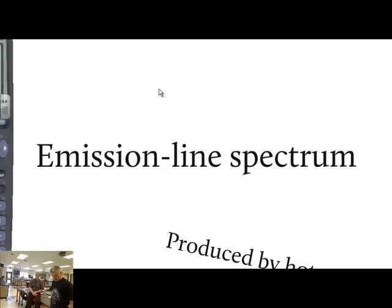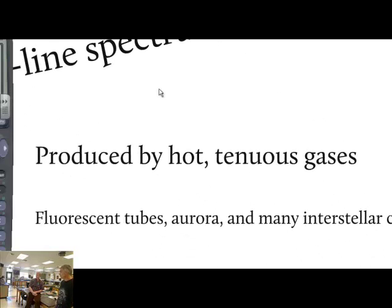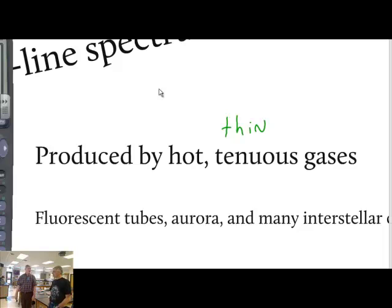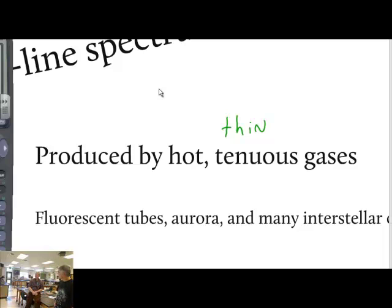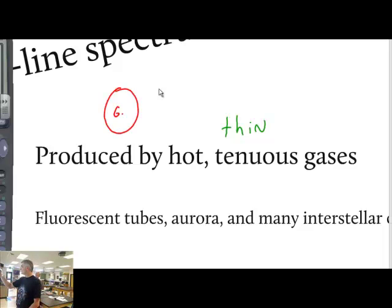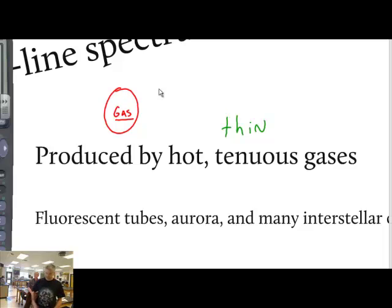The second kind is called an emission line spectrum, which is produced by hot, tenuous - meaning thin - gases. It depends on the density of the gas: how many molecules you have in a given volume. If you don't have very many molecules in a given volume, we call it a thin tenuous gas. Our atmosphere, for instance, is a tenuous gas. A star like the Sun, on the other hand, is just a bunch of gas - not really fire in the traditional sense but a nuclear reaction - and it's a very dense gas, not tenuous at all.